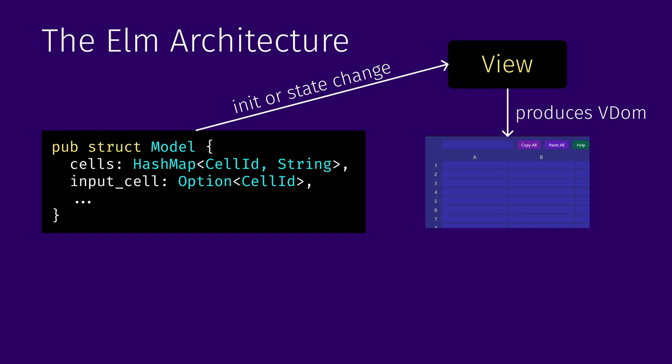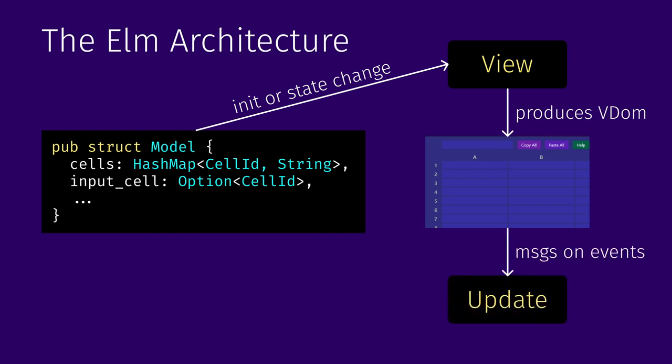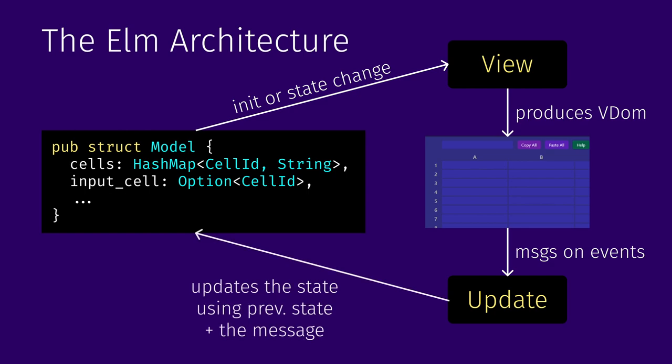Virtual DOM is just a data structure used internally by the framework to optimize DOM manipulations, so you don't need to redraw the whole application on every update. When a user enters something into an input field or presses a button, you use normal JavaScript-like callbacks. But those callbacks, instead of manipulating DOM directly, send messages. Those messages, together with the current state, are sent to a so-called update function. The update function recomputes the state depending on what it is and the message received. If the state was updated, the view function creates a new virtual DOM, then a diffing process updates the real DOM, and the user sees the updated interface.